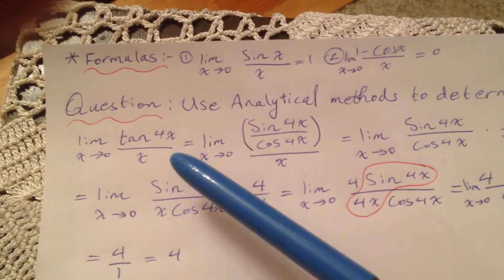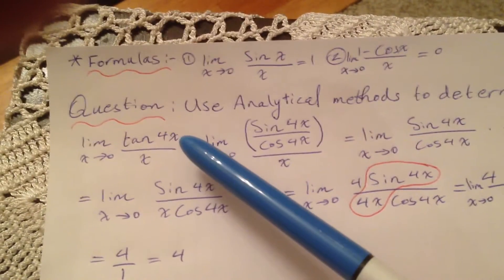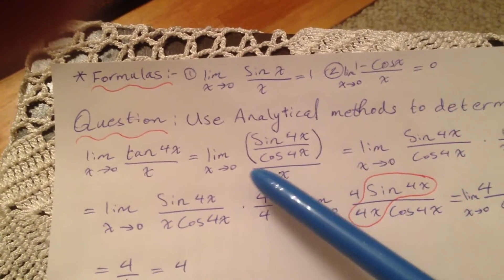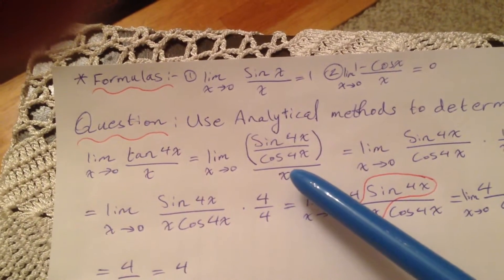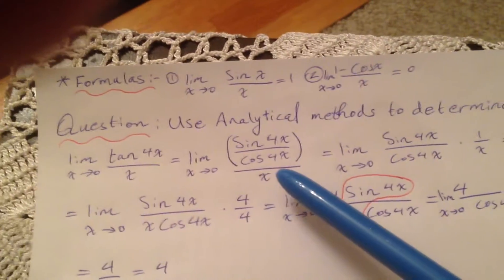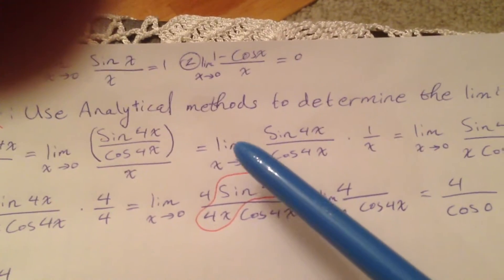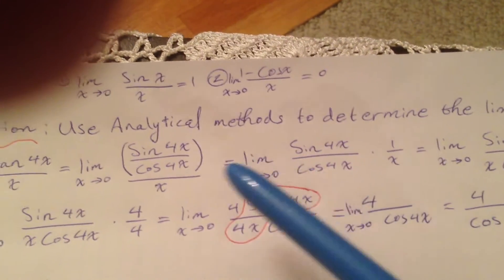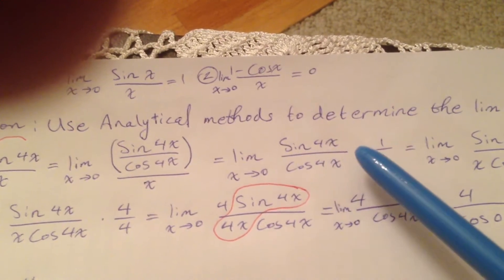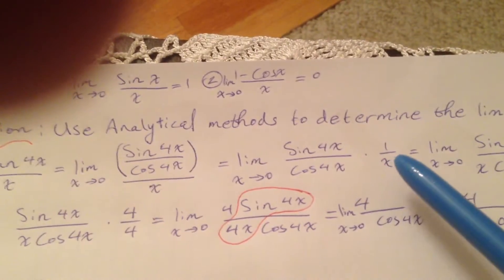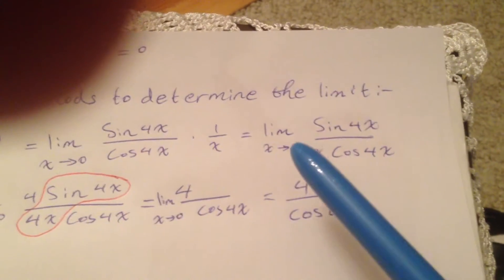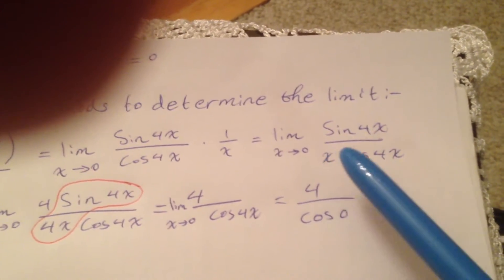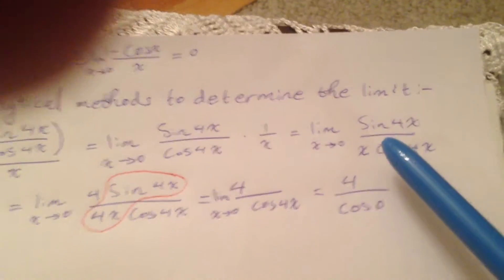Let's see what's happening here. Limit x approaching 0 of tan(4x) over x. First, we break tan(4x) into sine(4x) over cosine(4x), all over x. Next step: limit x approaching 0 of sin(4x) over x means multiplied by 1 over x, giving us limit x approaching 0 of sine(4x) over x·cosine(4x).